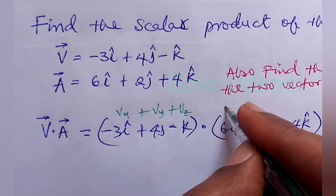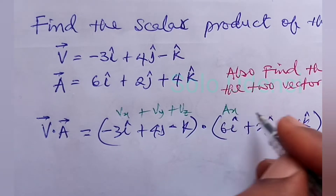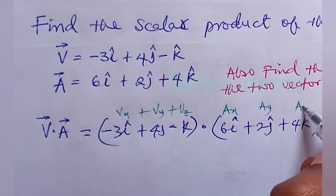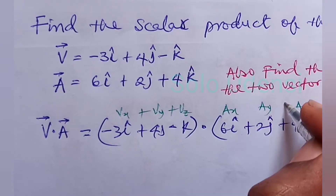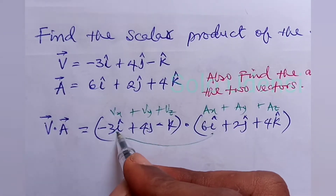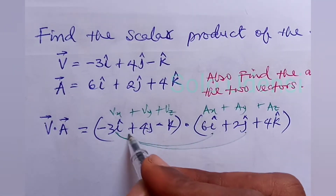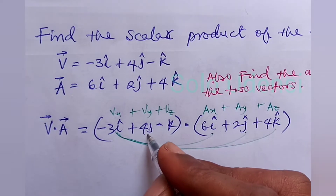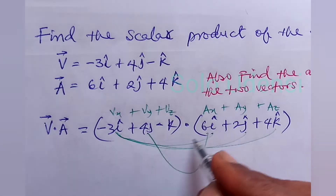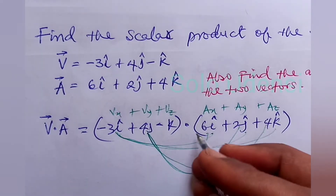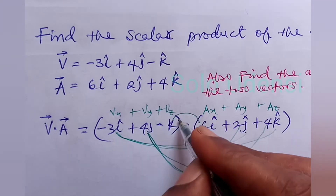This is AX plus AY plus AZ. We use each component of V to multiply each component of A in turn, and finally complete all the products.